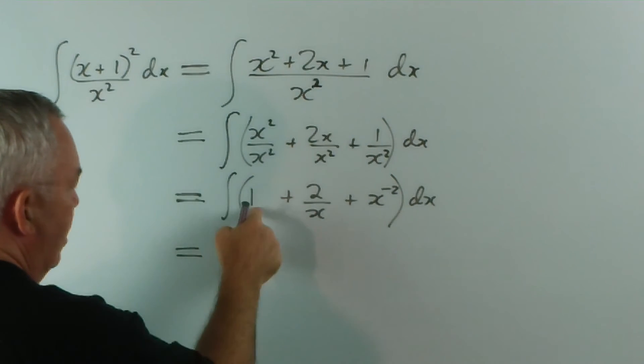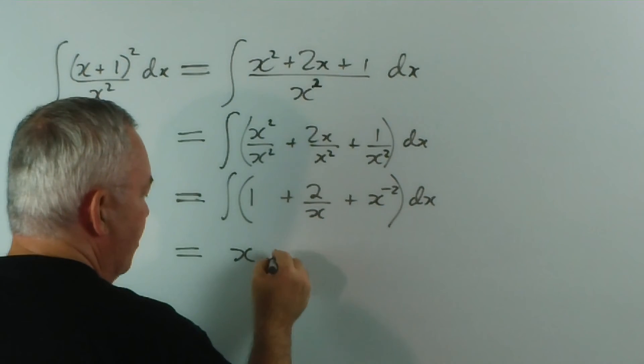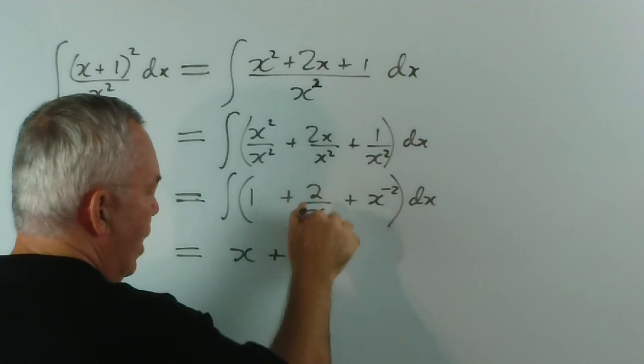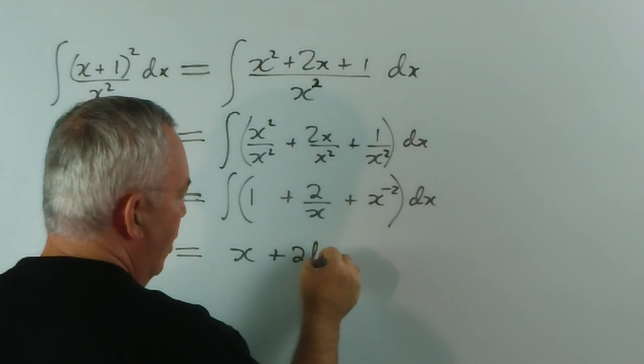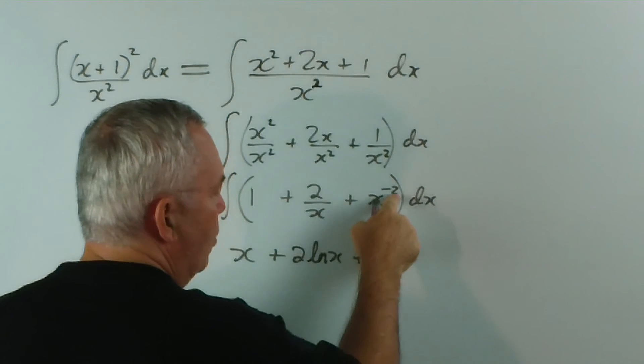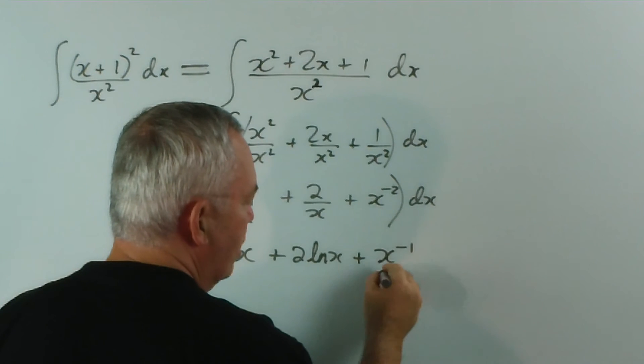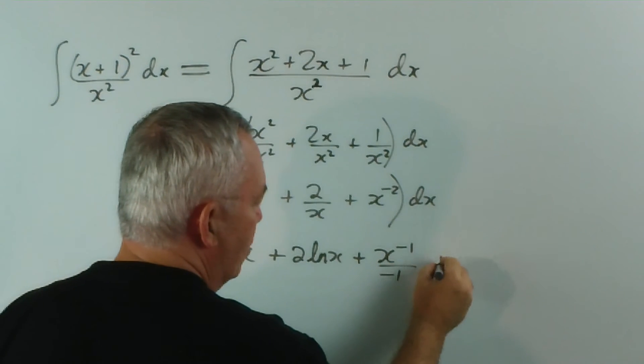Now, integrating, the integral of 1 is x. The integral of this, because it's 1 over x, is log x. And the integral of that, we add the power, add 1 to the power, so we get x to the minus 1 over minus 1 plus c.